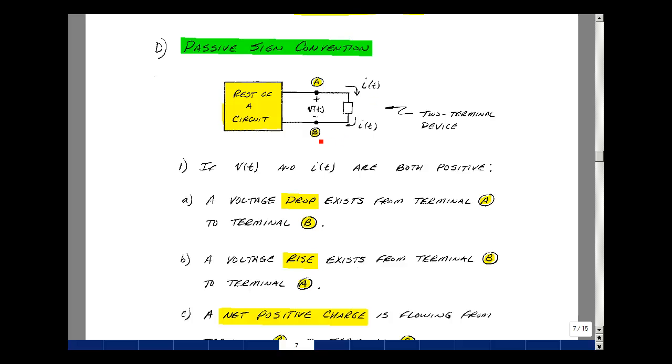With our direction of current shown here, the net positive charge is flowing from A to B. We could also say there's a net negative charge flowing from B to A.